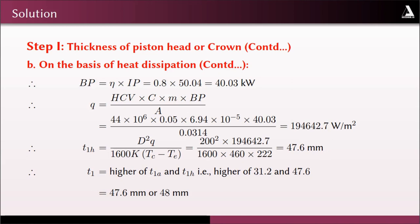The heat absorbed by the piston head q = HCV × c × m × BP / A = 194,642.7 W/m². Therefore the thickness based on heat dissipation T1h = 47.6 mm. The final piston head thickness is the higher of T1a = 31.2 mm and T1h = 47.6 mm, so T1 = 47.6 mm, taken as 48 mm.